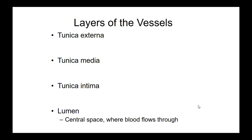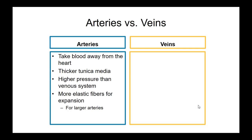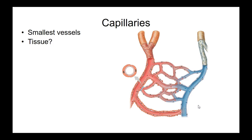We talked about structures of blood vessels, venous return, and comparing arteries and veins. Now I want to talk about capillaries, which are the smallest vessels. Just like regular blood vessels, they're made up of tissues. Think back to histology — that first layer making up the border of the lumen, the tissue with an apical and a basal surface. That's epithelium, and specifically it's a particular type called the endothelium. With capillaries, there are several types.